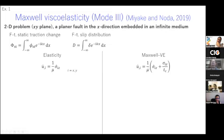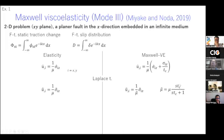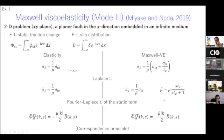If we solve for the stress change due to a sinusoidal slip distribution on the fault, in elasticity the stress change is proportional to the Fourier transform slip multiplied by the wave number and shear modulus. In the viscoelastic medium, we can simply put a tilde above mu, which is the well-known correspondence principle of viscoelasticity. So this is quite straightforward.